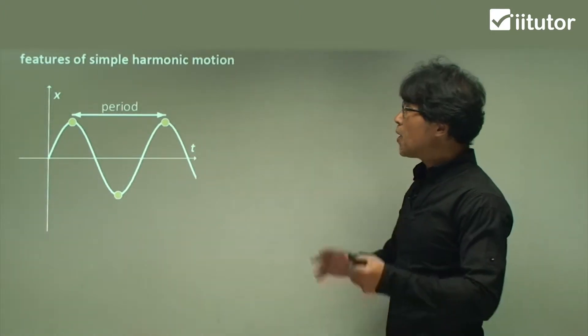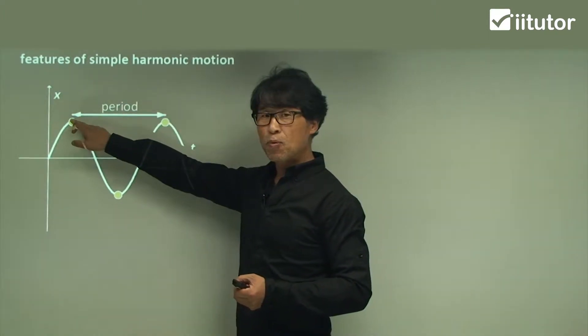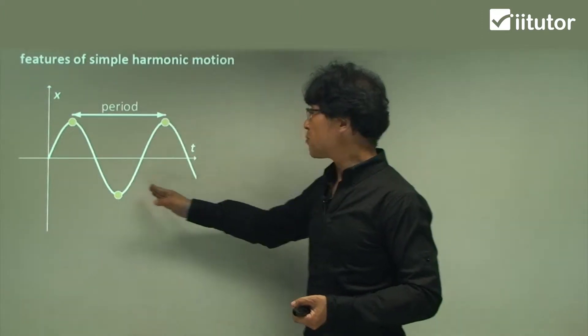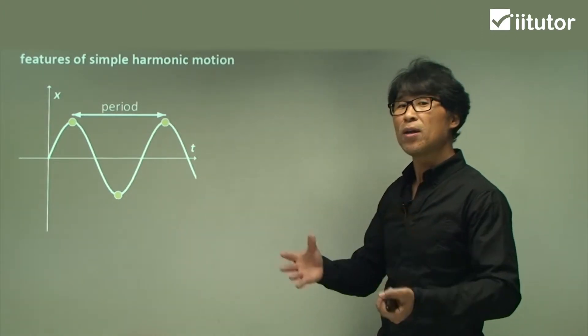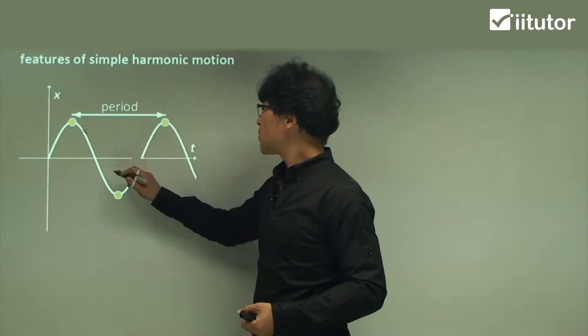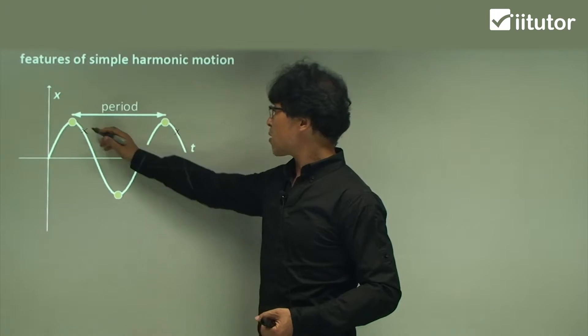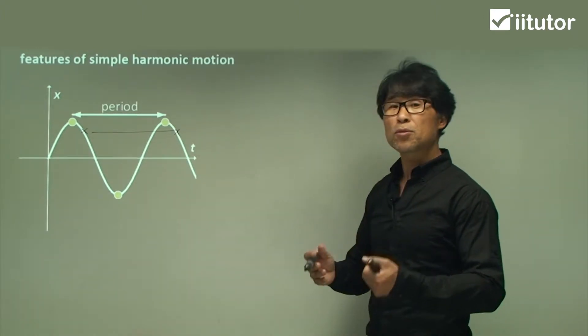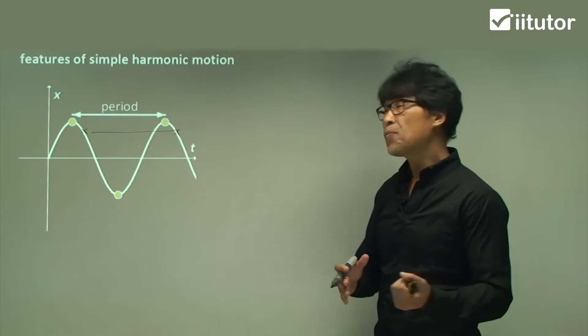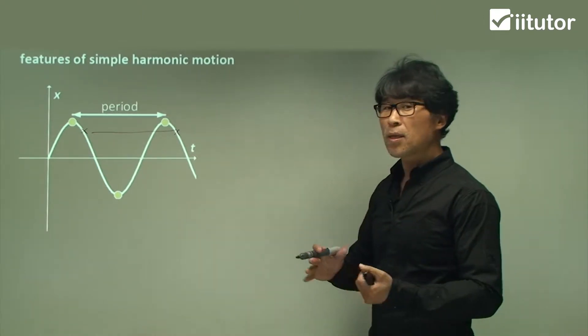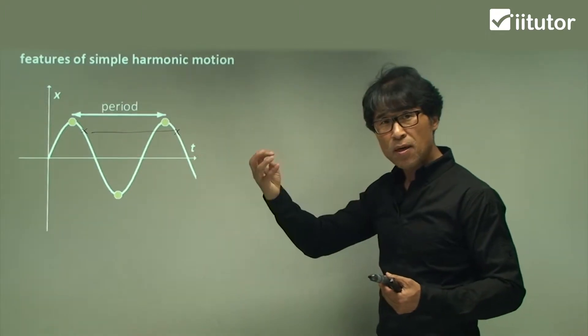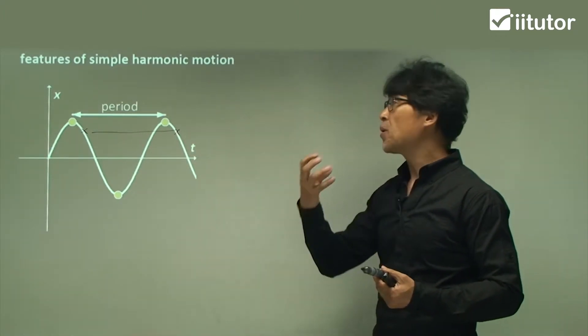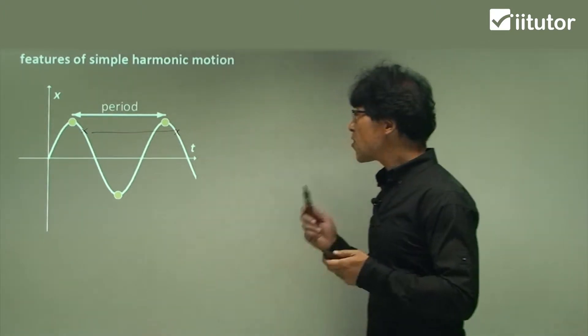In terms of a period, say from here, the maximum point to another maximum point. Well, not necessarily maximum to maximum, it can be minimum to minimum. Whichever case, it gives us the same value. A period talks about the duration of the time. It doesn't tell us about the length, like meters or anything at all, but it's time. How long does it take to get it back to the right position? That's what the period tells about.